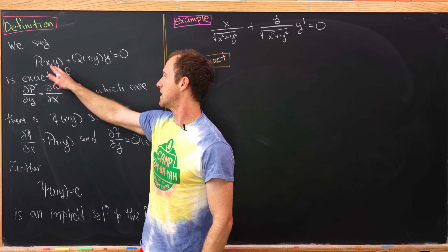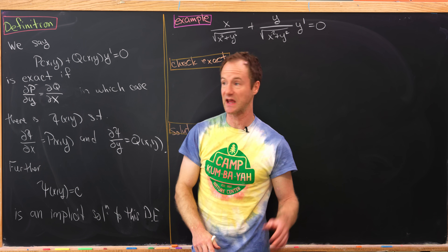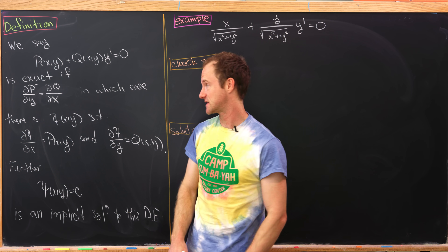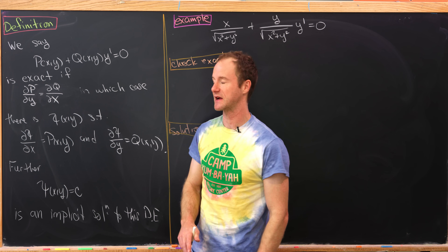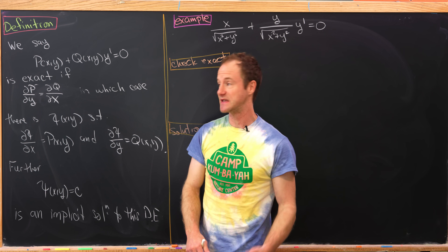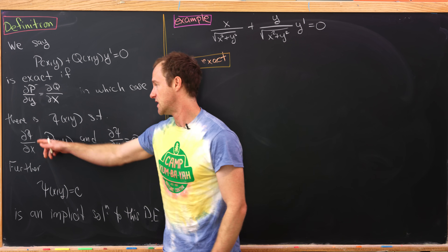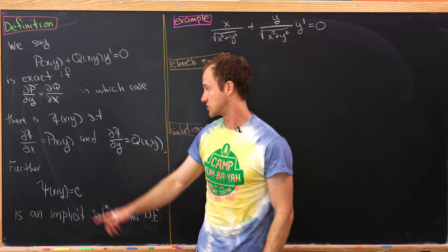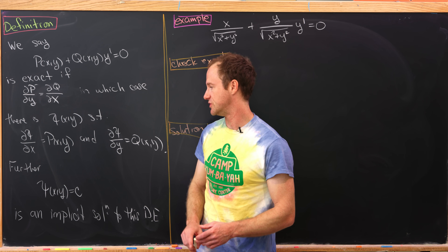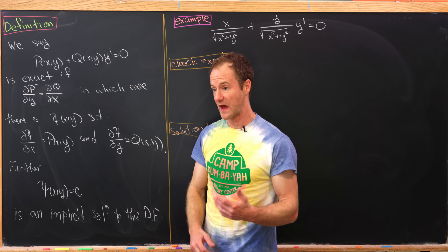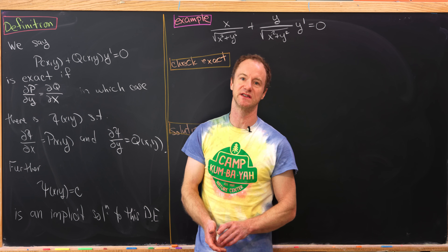A differential equation p plus q times y prime equals zero, where both of these functions are of x and y, is called exact if the partial of p with respect to y is the same thing as the partial of q with respect to x. Then, if this is satisfied, there is something called a potential function, psi, such that if you take the partial with respect to x of this function you get p, and if you take the partial with respect to y you get q. Furthermore, that gives you an implicit solution defined by psi of x, y equals c.